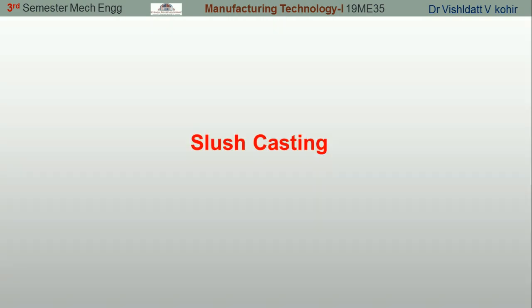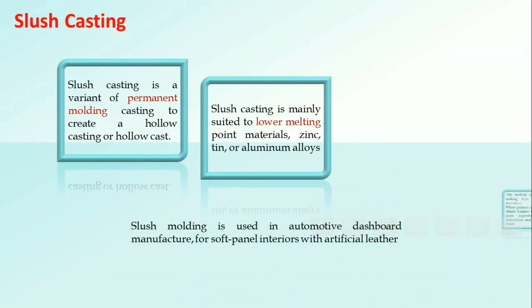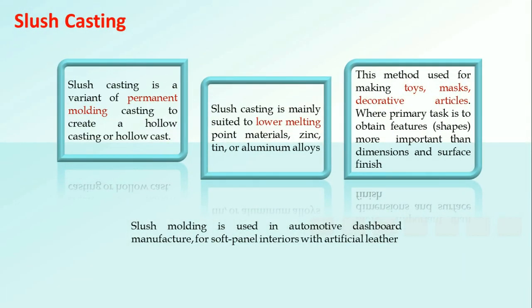In this video we discuss the slush casting process. Slush casting is a variant of permanent molding casting used to create hollow castings. This process is used to make toys, masks, and decorative articles.